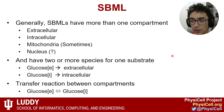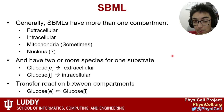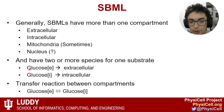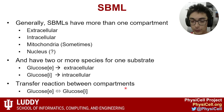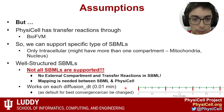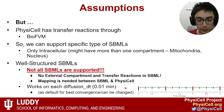Generally, SBMLs have more than one compartment — extracellular, intracellular, mitochondria, nucleus, etc. — with transfer reactions between species in different compartments. You will typically see glucose_E (extracellular) and glucose (intracellular) with a transfer reaction between them. This is important because PhysiCell also has its own transfer reaction simulator, bioFVM, so there could be a contradiction with two different transfer simulators.